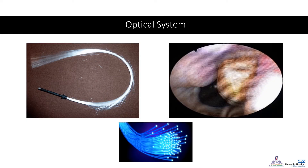Flexible scopes use a different optical system — the fibre-optic system — in which light fibres are used to transfer images, similar to how fibres transfer light. The difference is in the coherence and arrangement of the fibres. That is why the picture from a fibre-optic scope will usually appear in a honeycomb arrangement.